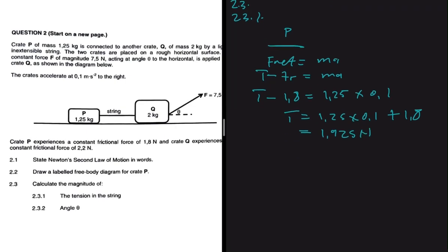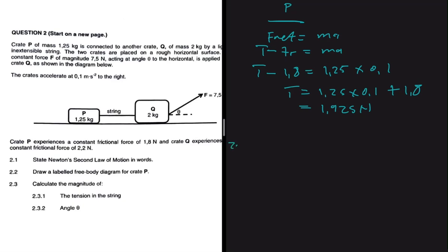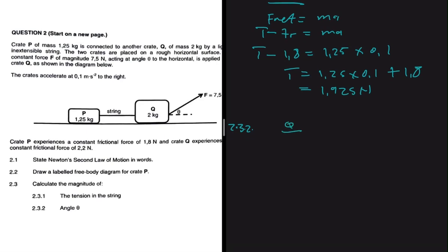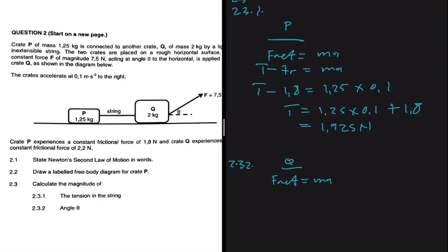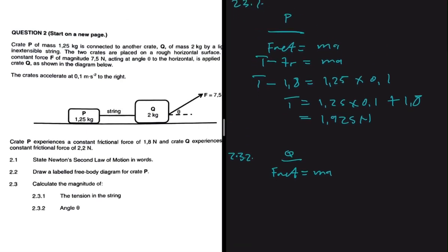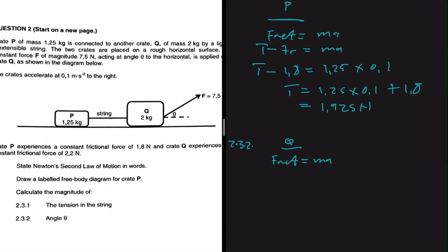Just like that we have the magnitude of the tension. Now let's conclude the magnitude of the angle theta. The angle theta has to do with crate Q. So now for Q, we underline for the sake of clarity and we say that F_net equals ma.